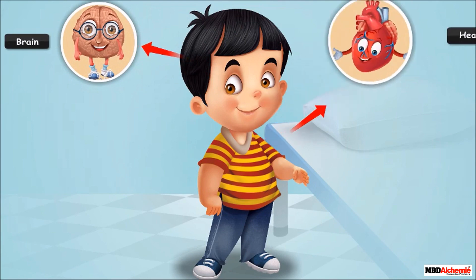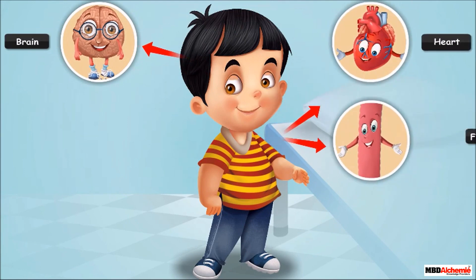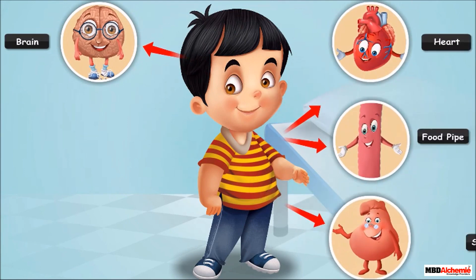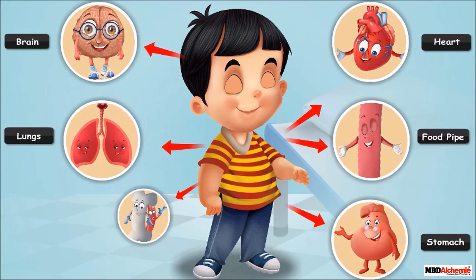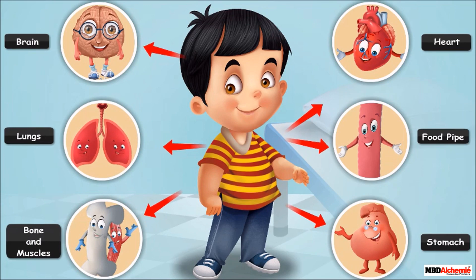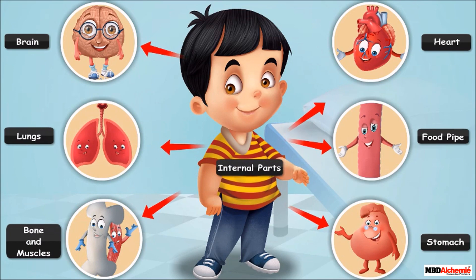So kids, inside Sid's body we have found his brain, heart, food pipe, stomach, lungs, bones, and muscles. We cannot see the internal parts from outside. They are called the internal parts. Just like Sid, we all have these internal parts in our body.